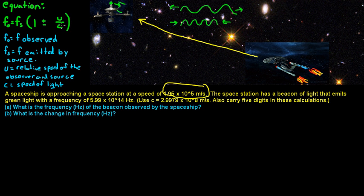So f_o is going to be the frequency observed. That's what we're looking for. f_s is the frequency emitted by the source, so f_s is going to be this 5.99 times 10 to the 14th hertz.